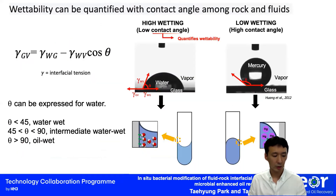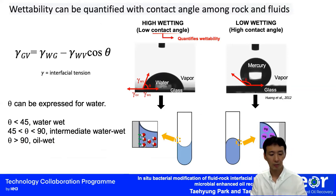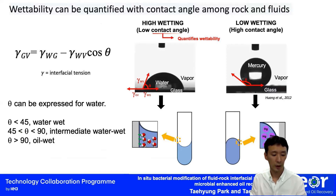Wettability is represented by the contact angle. If the rock is water-wet, the water wetting angle is low — less than 45 degrees. If it is oil-wet, the water wetting angle will be greater than 90 degrees. In between, we call it the intermediate water-wet condition.